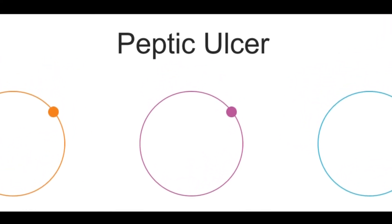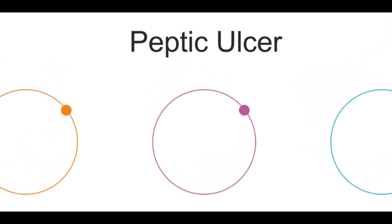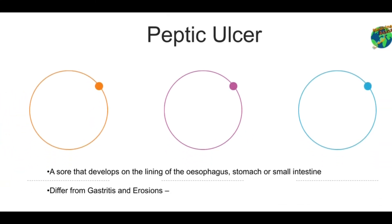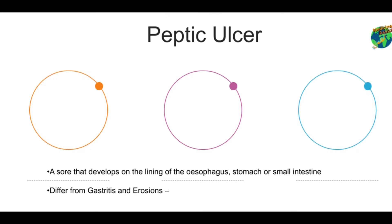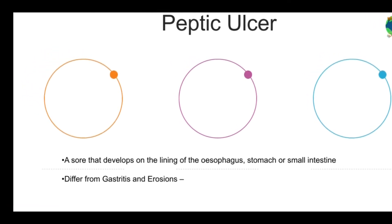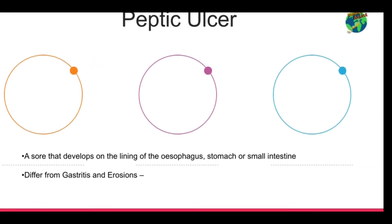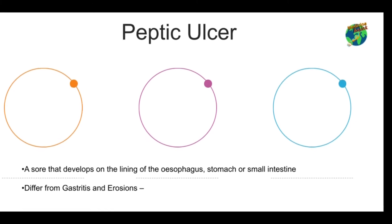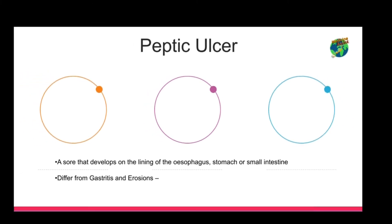Now let's move on to peptic ulcer. It is a sore that develops on the lining of the esophagus, stomach or small intestine. It differs from gastritis and erosions in that ulcers typically extend deep into the muscularis mucosae — the third layer of the stomach wall, which consists of mucosa, submucosa, muscularis and serosa.